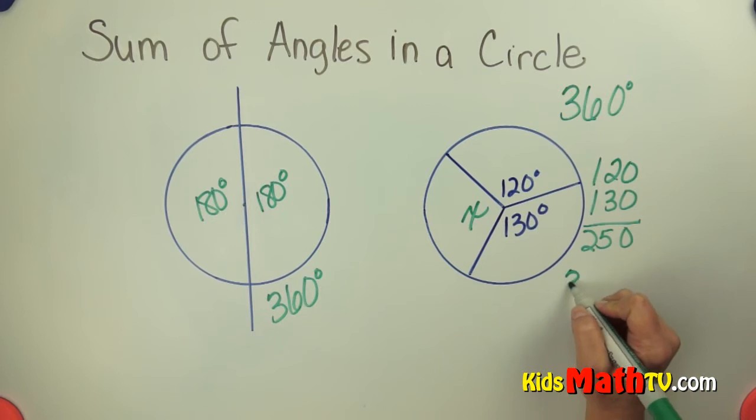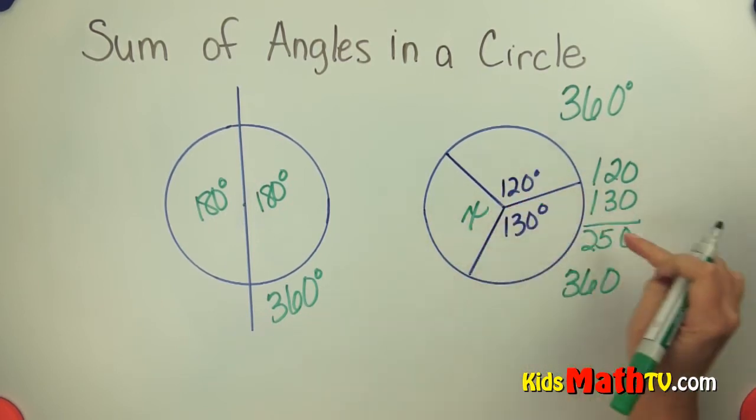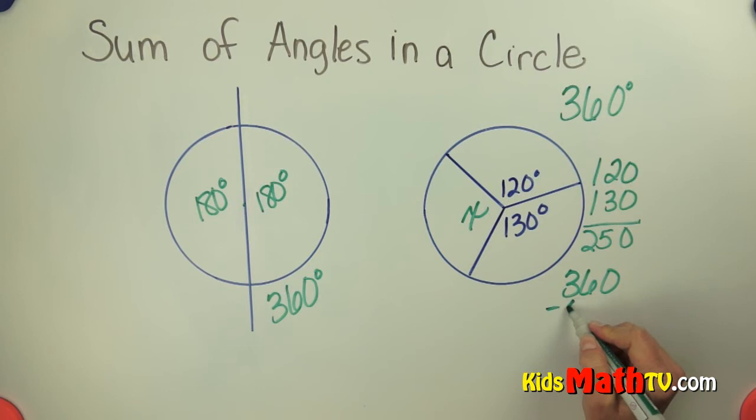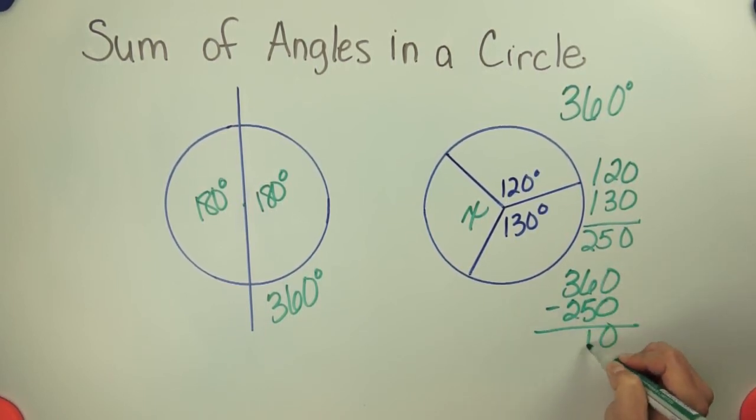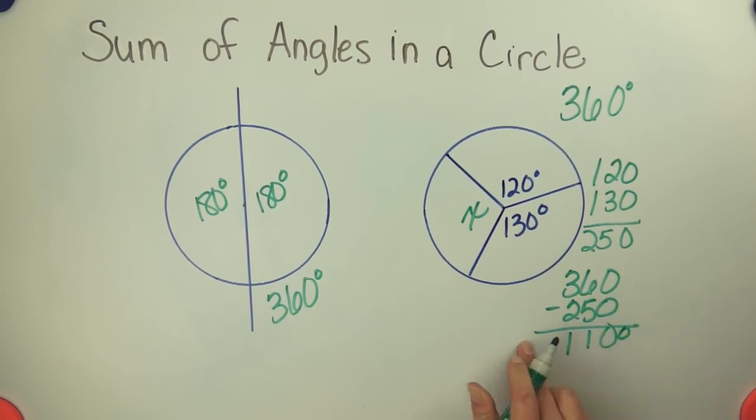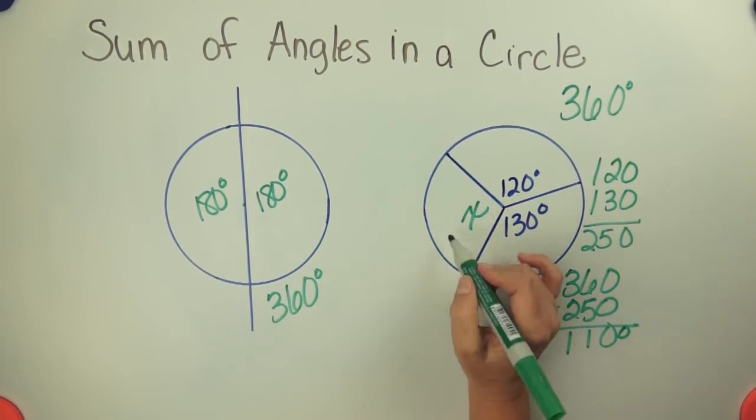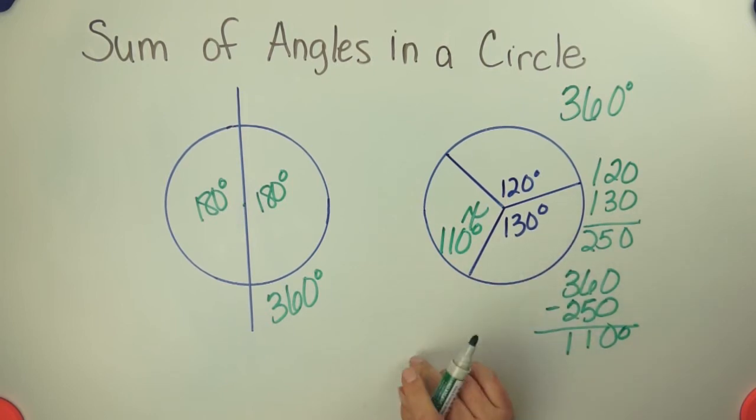We can take the total 360 in the whole circle, subtract 250 that's already there, and we get 110 degrees left over. So the measure of angle x is 110 degrees.